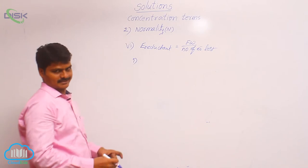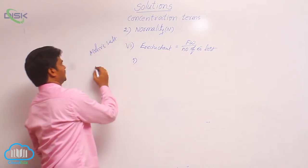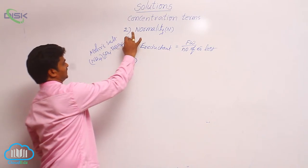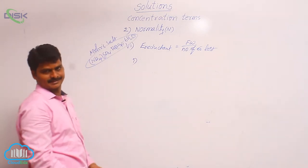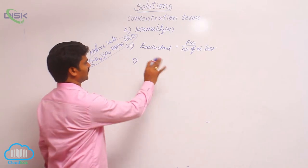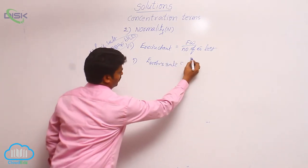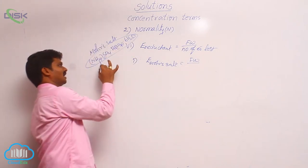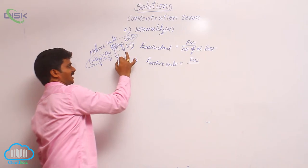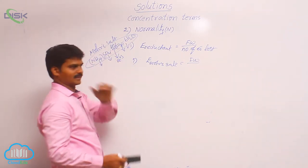Let us see some examples for reductants. First, Mohr salt, whose formula is (NH₄)₂SO₄·FeSO₄·6H₂O — frequently used in volumetric analysis. In its reaction, ammonium ion, sulphate, and water do not change. Only ferrous changes to ferric: Fe²⁺ → Fe³⁺, involving 1 electron. Therefore, equivalent weight of Mohr salt equals formula weight divided by 1.